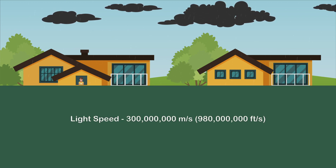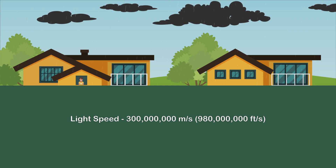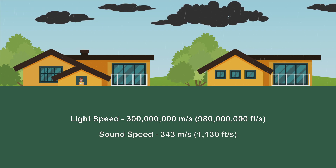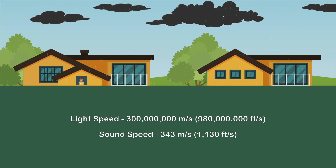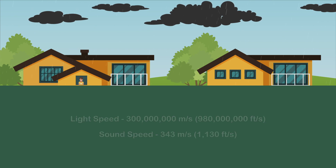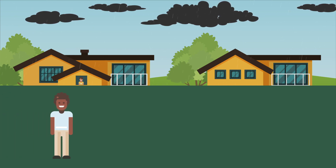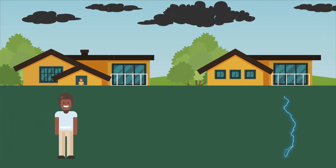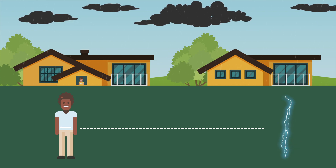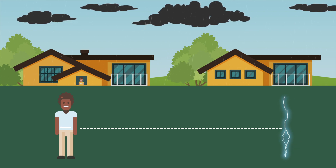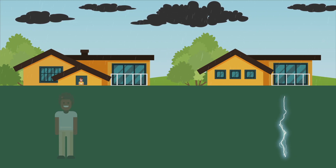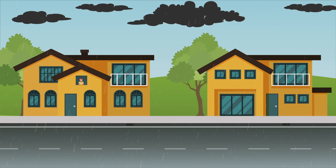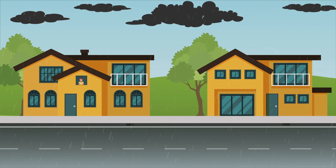Light travels at about 300 million meters per second, and sound travels through the air at about 343 meters per second. You can calculate roughly the distance between yourself and the lightning by timing the interval between the visible light and the thunder it generates. A lightning flash preceding its thunder by one second would be approximately 343 meters away.